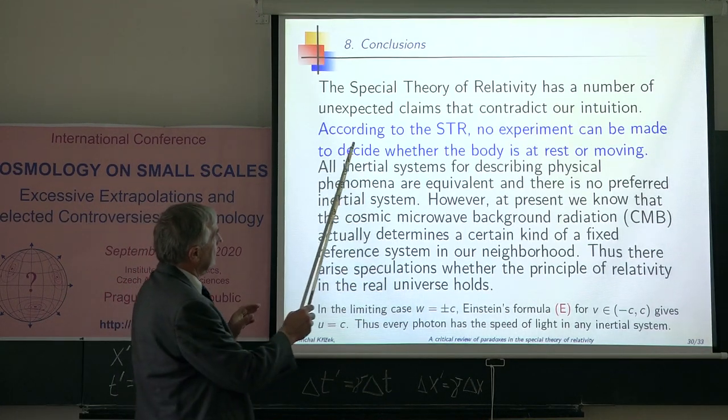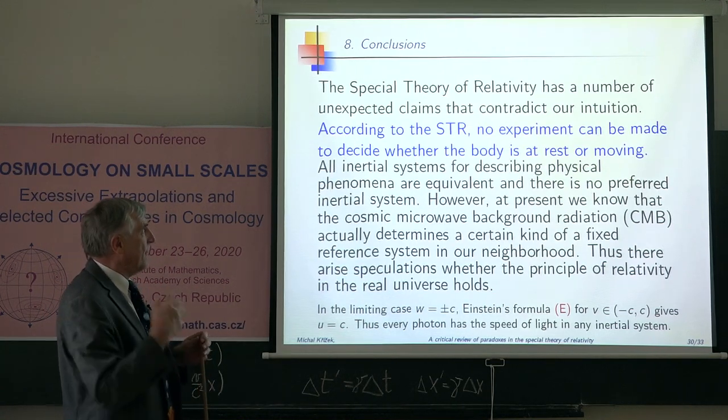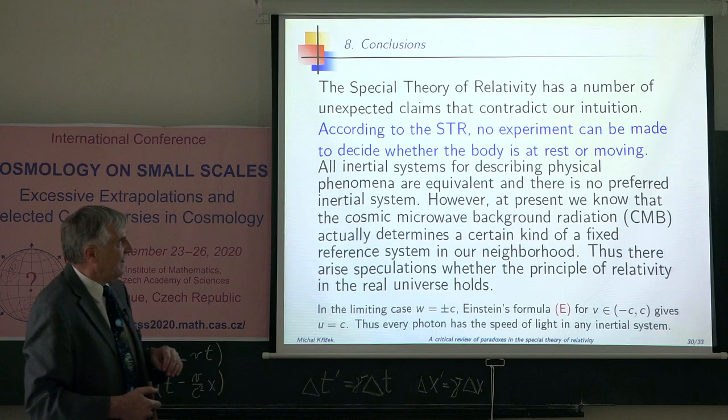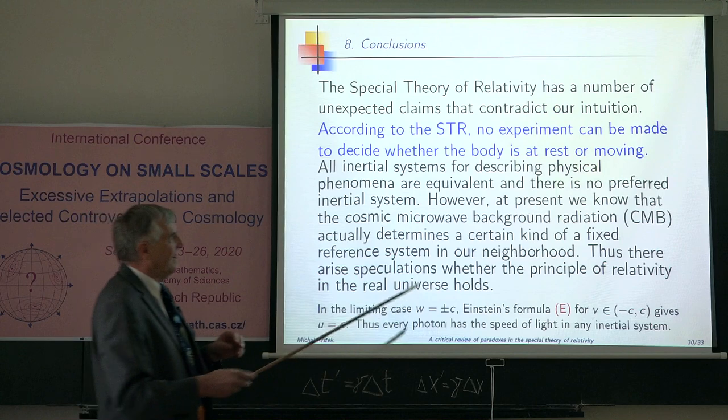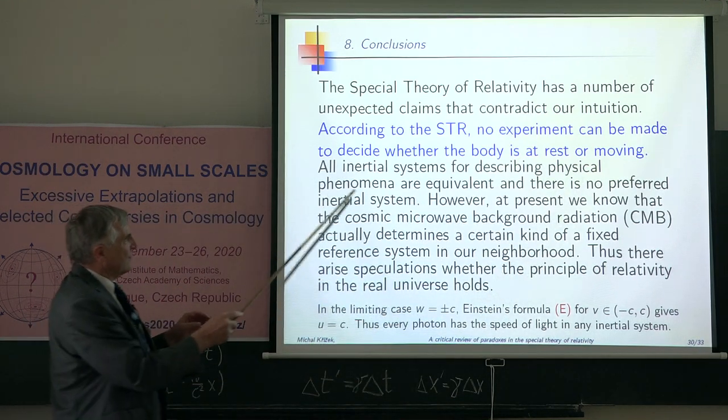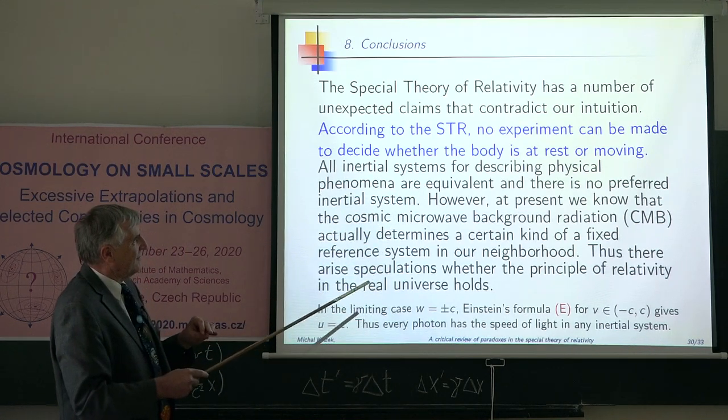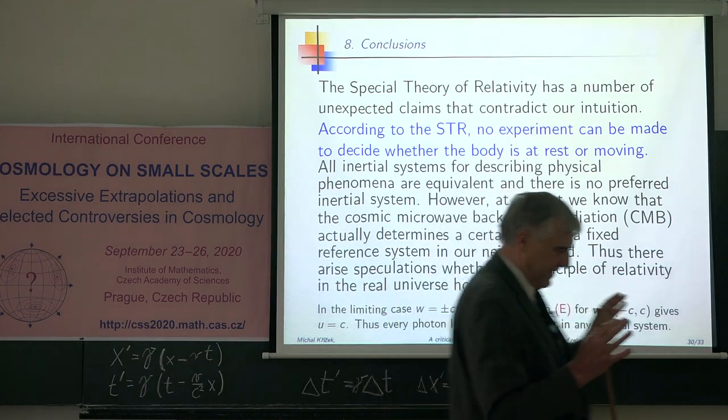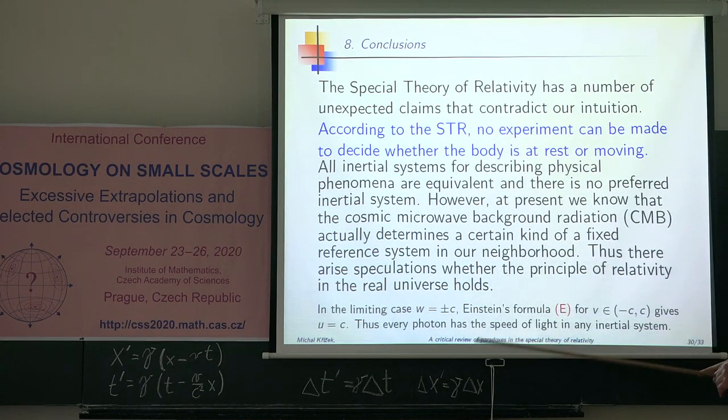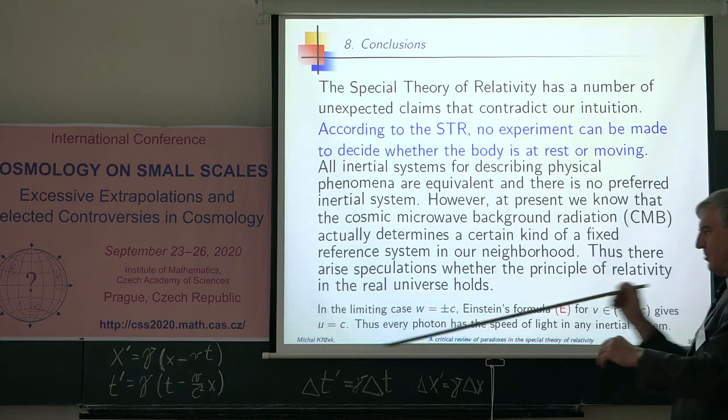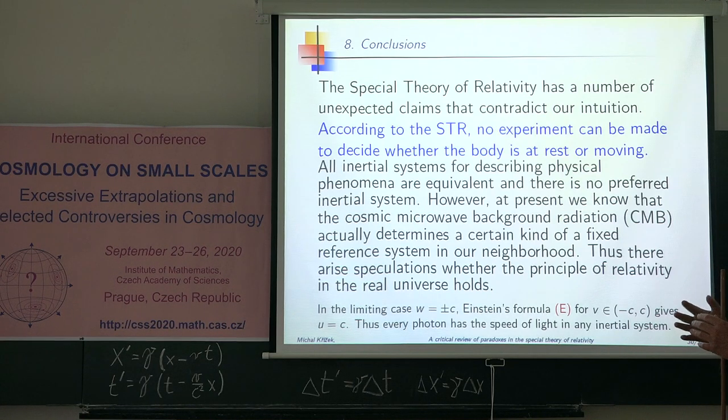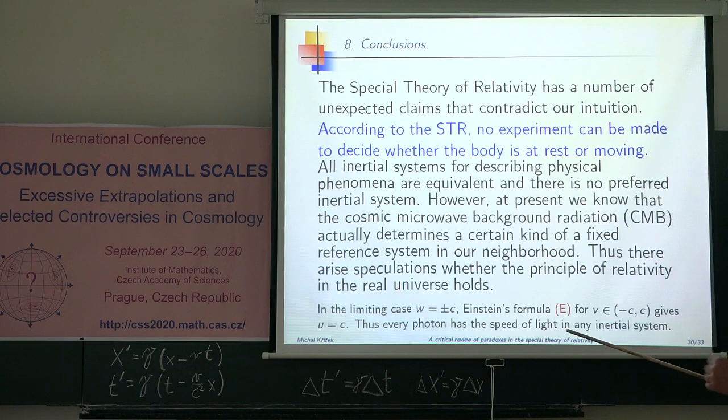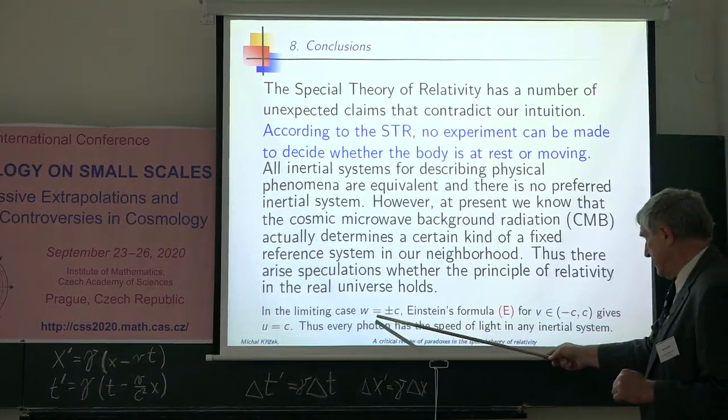Conclusions. Special relativity has a number of unexpected claims that contradict our intuition. According to the special theory of relativity, no experiment can be made to decide whether the body is at rest or moving. All inertial systems for describing physical phenomena are equivalent and there is no preferred inertial system. However, nowadays we know that maybe some preferred system is cosmic microwave background. Because if we move in this direction or that direction, we can find some optimal velocity so that you see completely homogeneous cosmic microwave background.